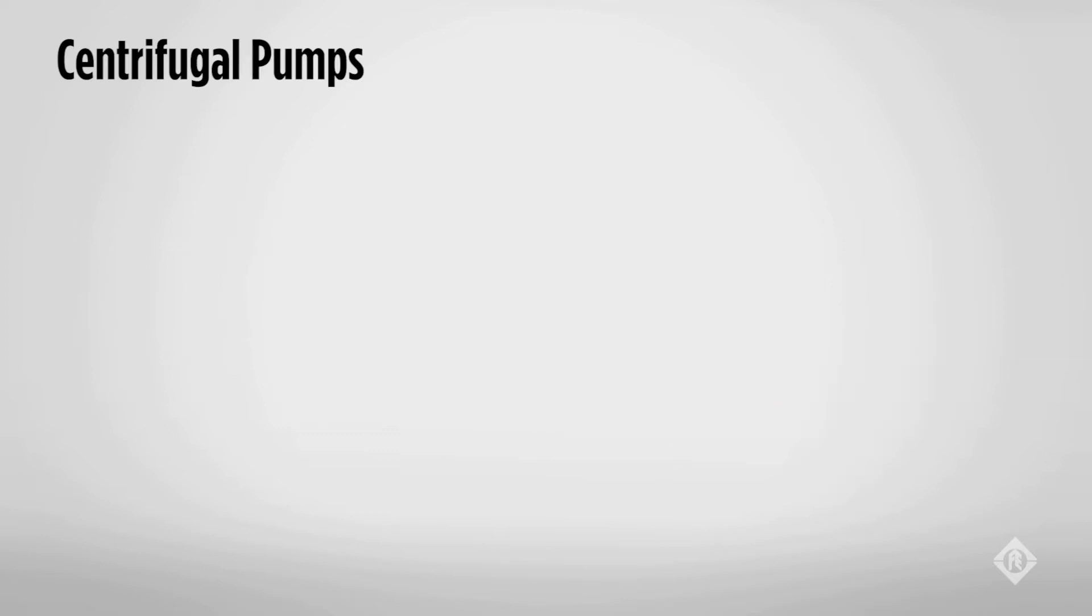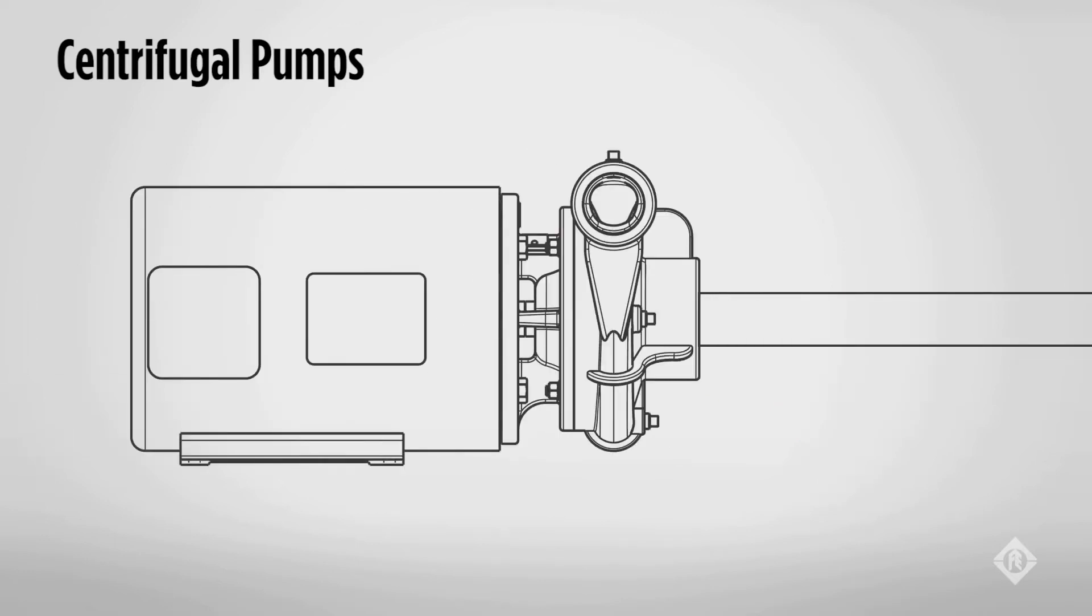The pump works by the pump case being filled with water, which is called priming. When the impeller turns and forces the water to the outside circumference, the water is moved toward the discharge of the pump. As the water moves to the discharge, a vacuum is formed at the eye of the impeller, causing more water to move into the impeller.